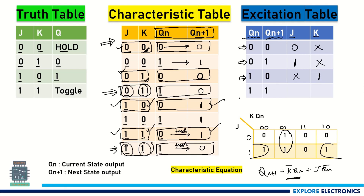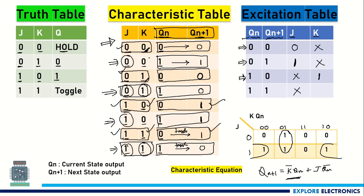Next, look at the 1→1 transition. Where is Qn=1, Qn+1=1? Here is 1,1 and also here is 1,1. This transition is generated for J=0,K=0 and J=1,K=0. Here J is changing from 0 to 1, so let me write it as X, and K is 0 itself — so K is 0.